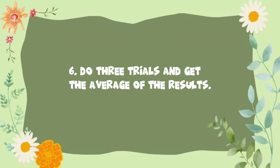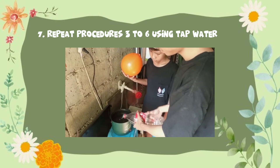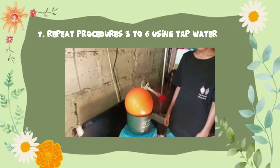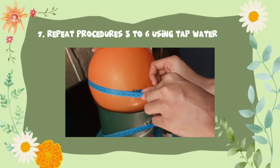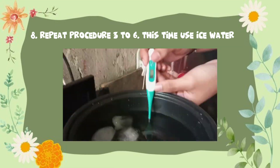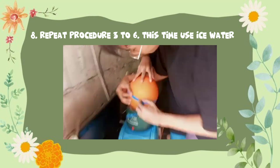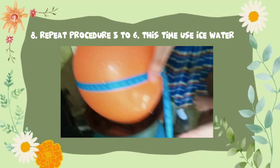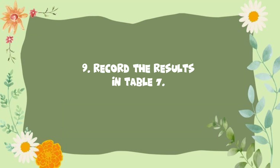Number 6: do 3 trials and get the average of the result. Number 7: repeat procedures 3 to 6 using tap water. Number 8: repeat procedures 3 to 6, this time use ice water. Number 9: record the result in the table.